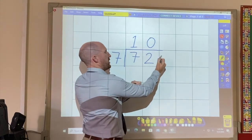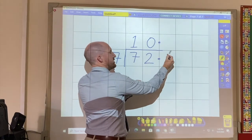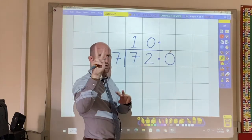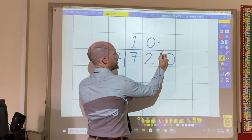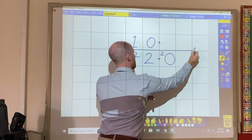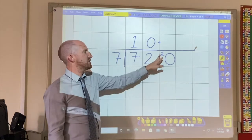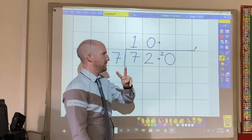But I have 2 remainder. So decimal point, decimal point, 0. And that 2 remainder now goes next to the 0. How many 7's in 20? There are 2.